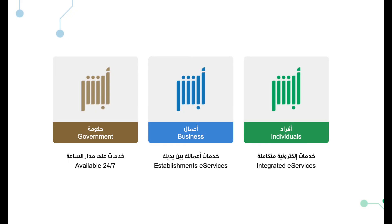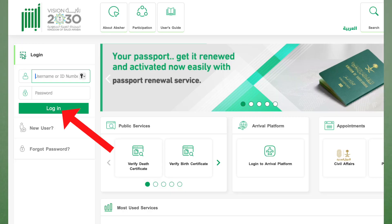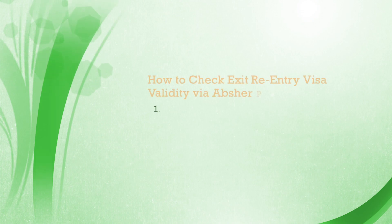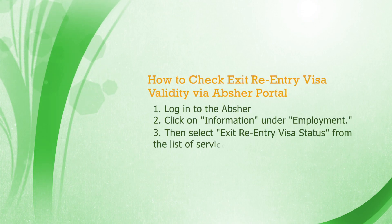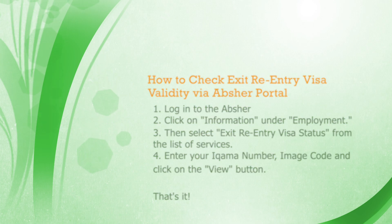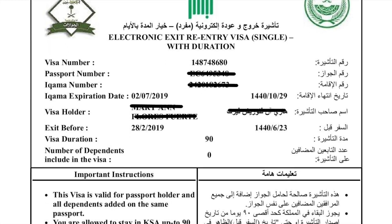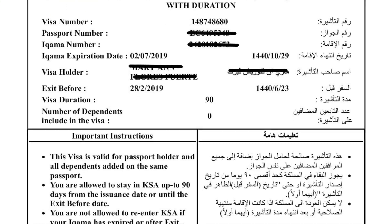Alternatively, you can check your visa status on Absher. Here's how. Go to the Absher website. Select Individuals and then choose English. Log in using your username and password. On the home page, click on Information under the Employment section. Select Exit re-entry visa status from the list of services. Enter your Ikama number and image code, then click View. You'll be able to view your visa validity status, including the visa number, duration, and type.